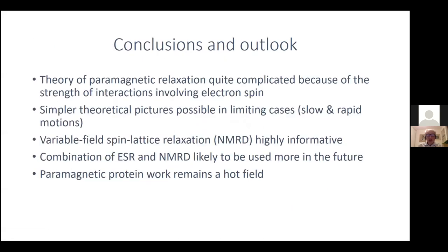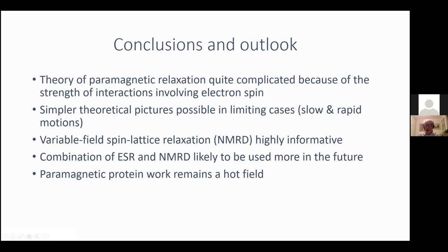Here are some nice NMRD profiles on nitroxides. Let me come to the conclusions. The theory of paramagnetic relaxation is quite complicated because of the strength of interactions involving the electron spin. Simple theoretical pictures of these systems are possible in limiting cases. If you want a more general description, you need to use more complex theories. Variable-field spin-lattice relaxation is highly informative, and I believe that the combination of ESR and NMRD is likely to be used more in future work. Paramagnetic proteins remain a hot field.